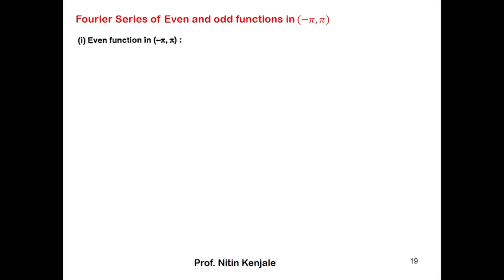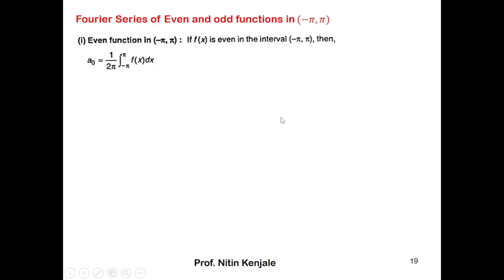Now let us find the Fourier series of a function that is even or odd in the interval minus pi to pi. First, the case of even functions. If f(x) is even in the interval minus pi to pi, then a-naught, given by 1 over 2pi times the integral of f(x) dx from minus pi to pi, equals 2 times the integral from 0 to pi of f(x) dx divided by 2pi. The 2's cancel, so a-naught becomes 1 over pi times the integral of f(x) dx from 0 to pi.